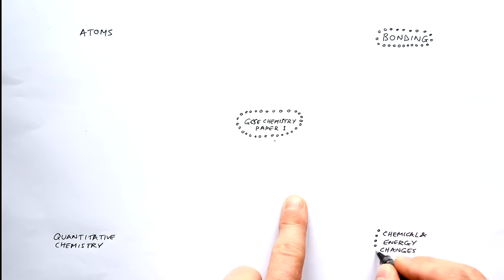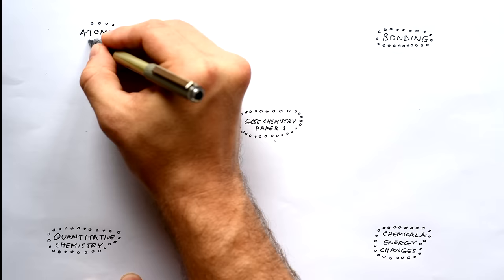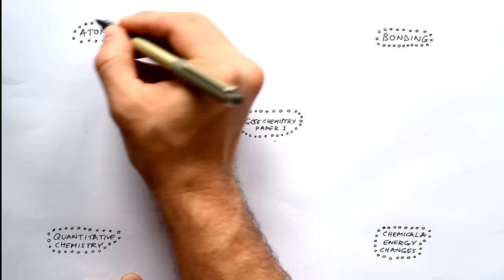Let's try and go through all of the chemistry that you need to know for GCSE chemistry paper one. We're going to be covering atoms, bonding, quantitative chemistry, chemical changes, and energy changes. Don't forget you can download the PDF version of this from scienceshorts.net — link in description.